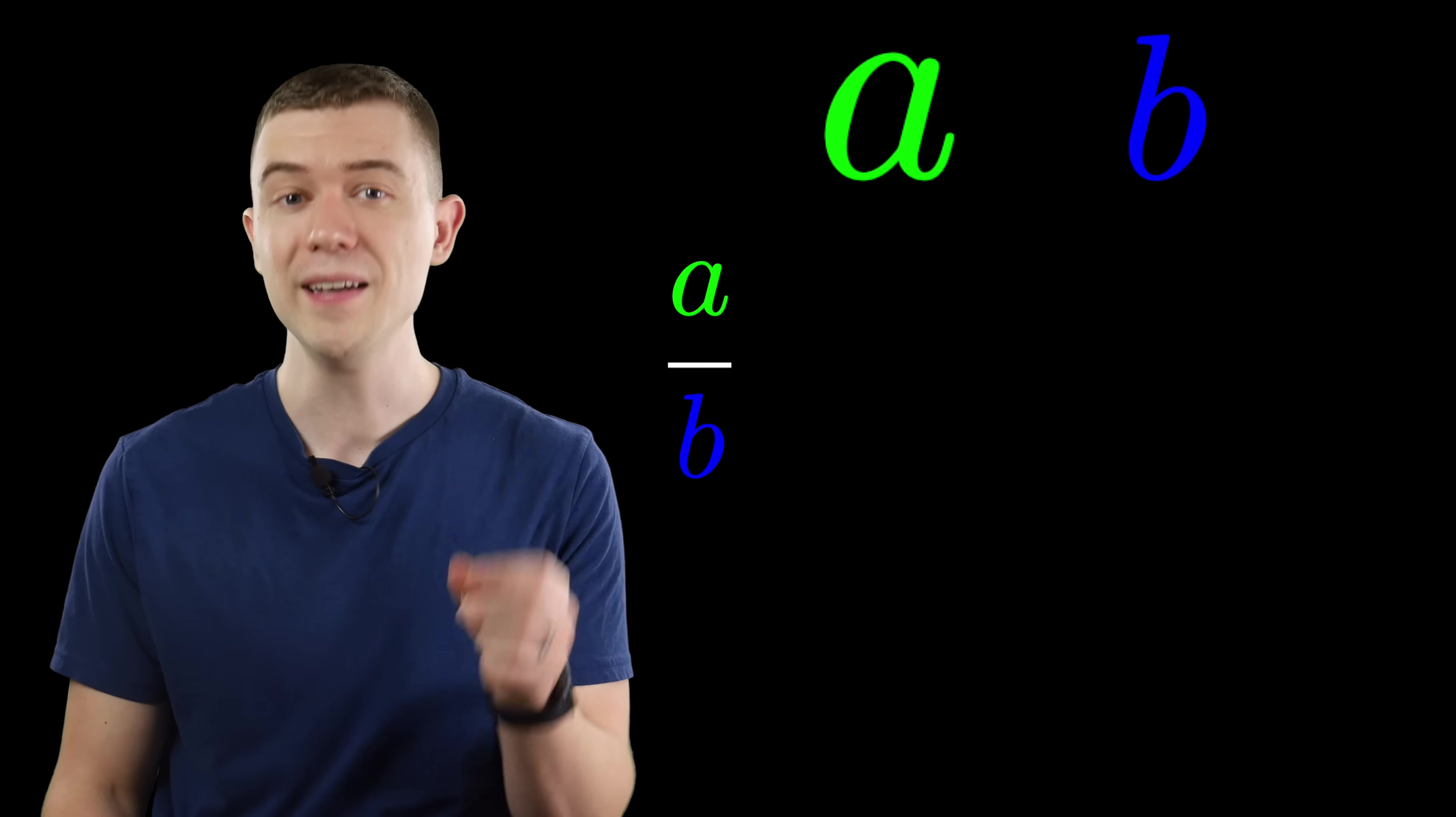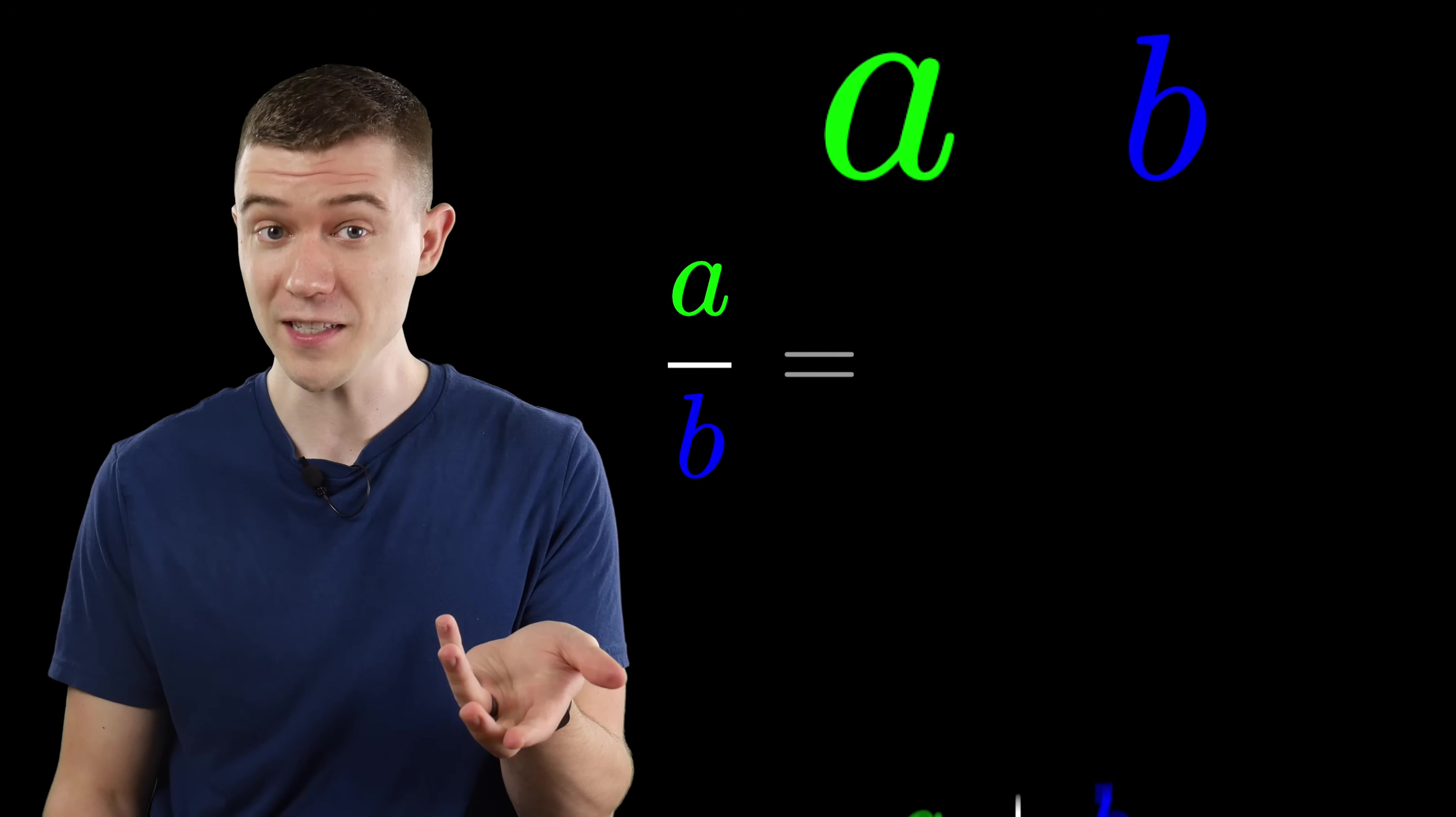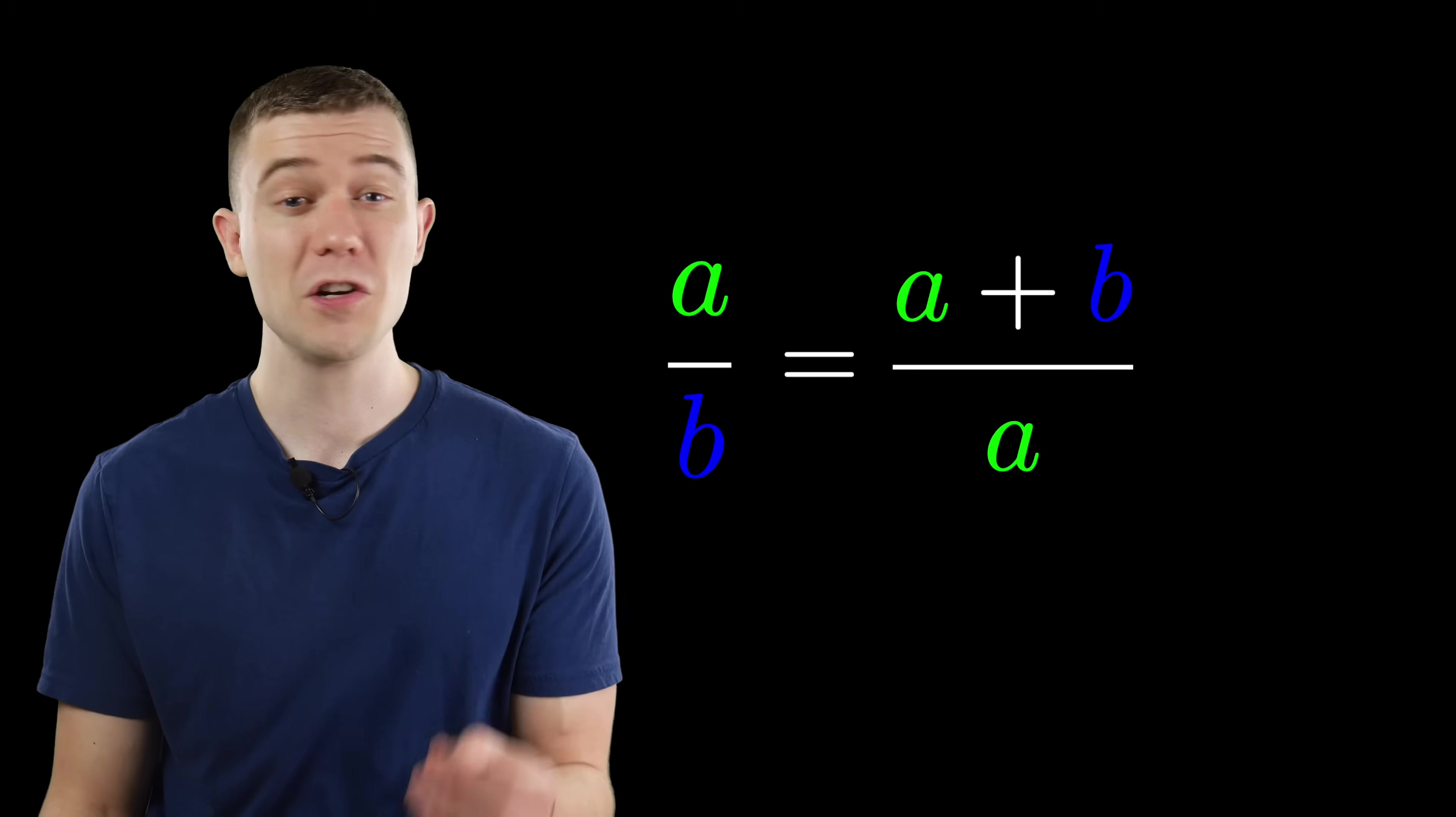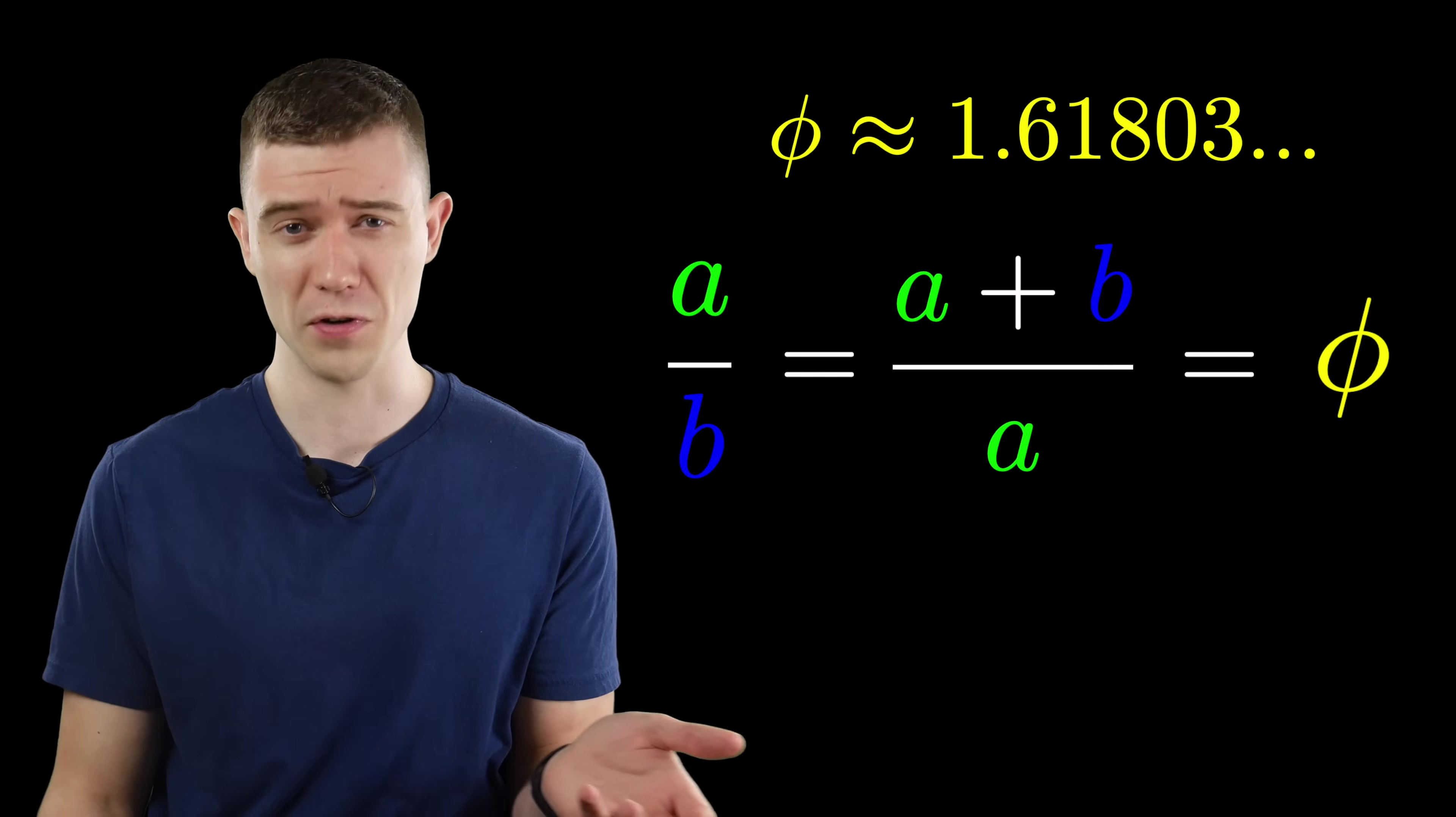Two quantities, a and b, are in the golden ratio if a over b is the same as the ratio of their sum, a plus b, to the larger of the two quantities. This golden ratio is called phi, it's about 1.6, and shows up all over nature.